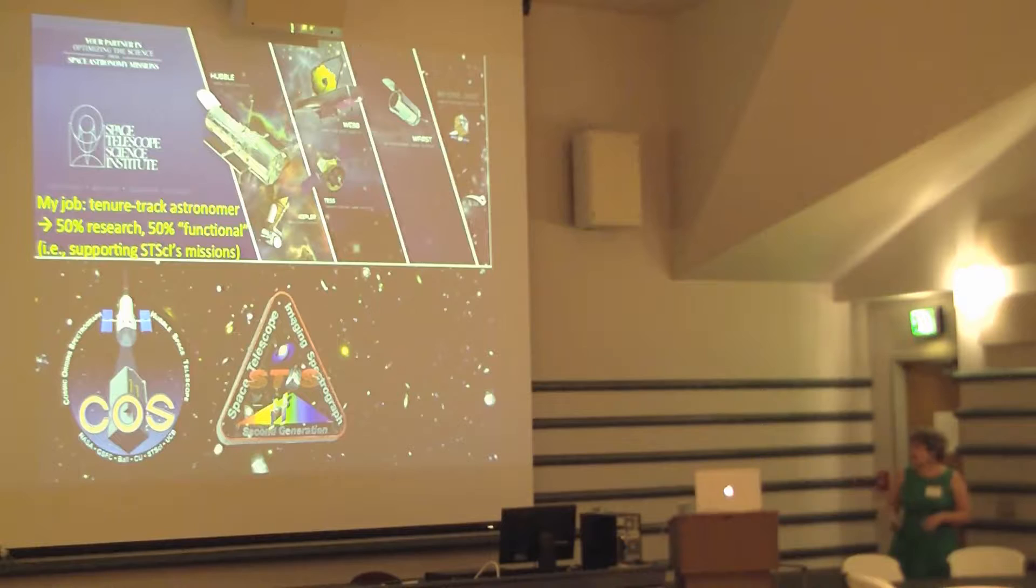And the second instrument that I work on is STIS, the Space Telescope Imaging Spectrograph. I'm not going to be talking about this later in the talk, but it's got quite a varied history. It was installed in 1997. It failed in 2004, took a nap, and the astronauts were able to fix it in 2009. And it's working beautifully, and it's working so beautifully that pretty much the calibrations are stable, and it can just keep on going, and we spend all of our time taking care of COS.